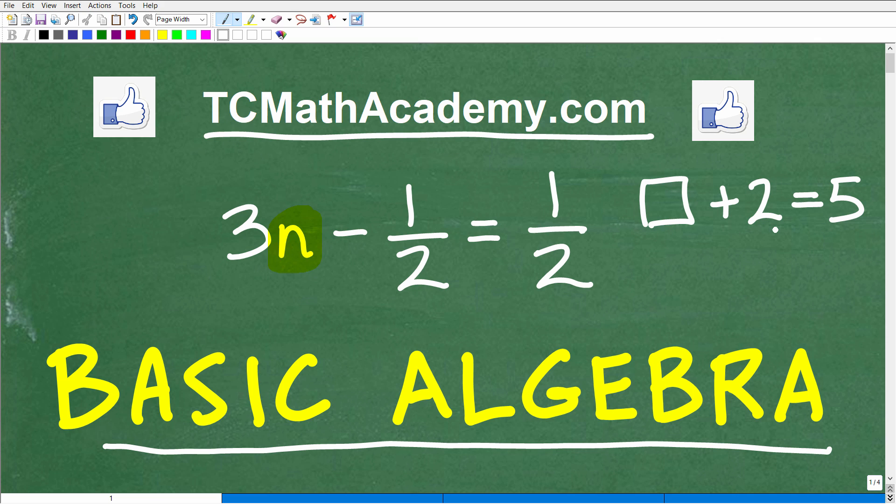So here, we kind of had to kind of guess, right? You're like, okay, it's 1 plus 2. No, that's 3. 2 plus 2, no, that's 4. Oh, 3. 3 plus 2 is, in fact, 5. That is the answer.